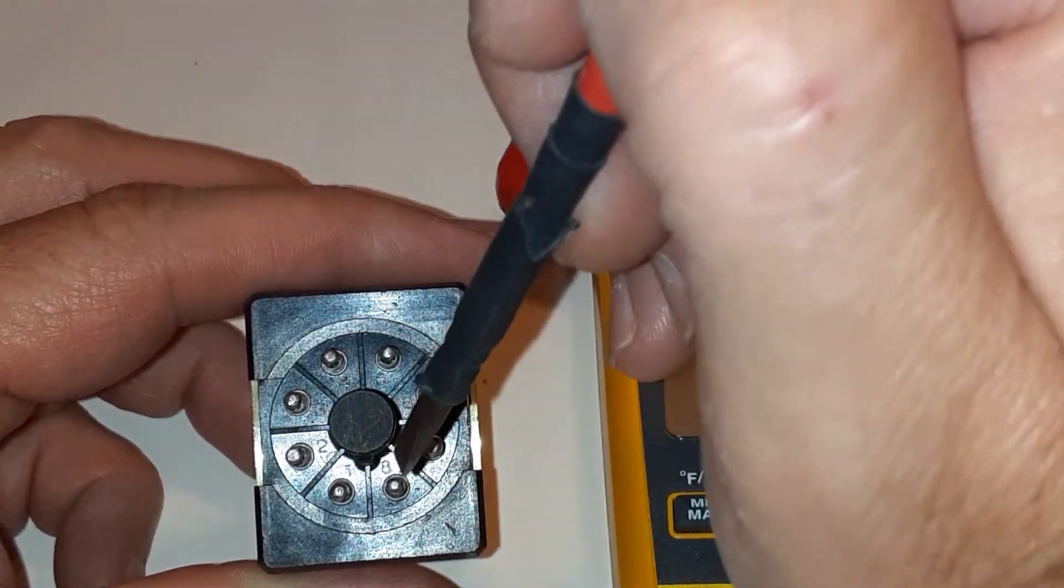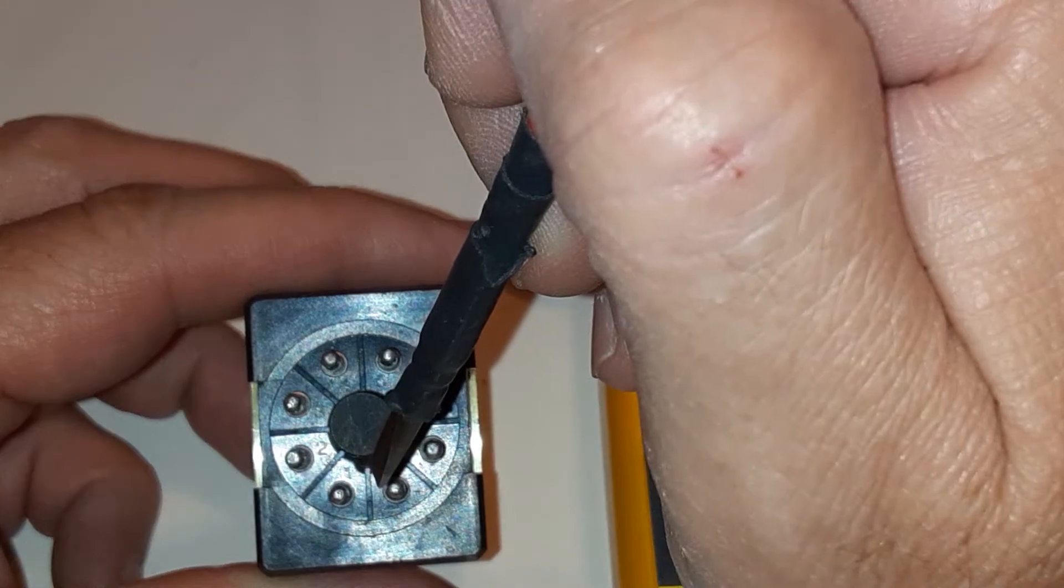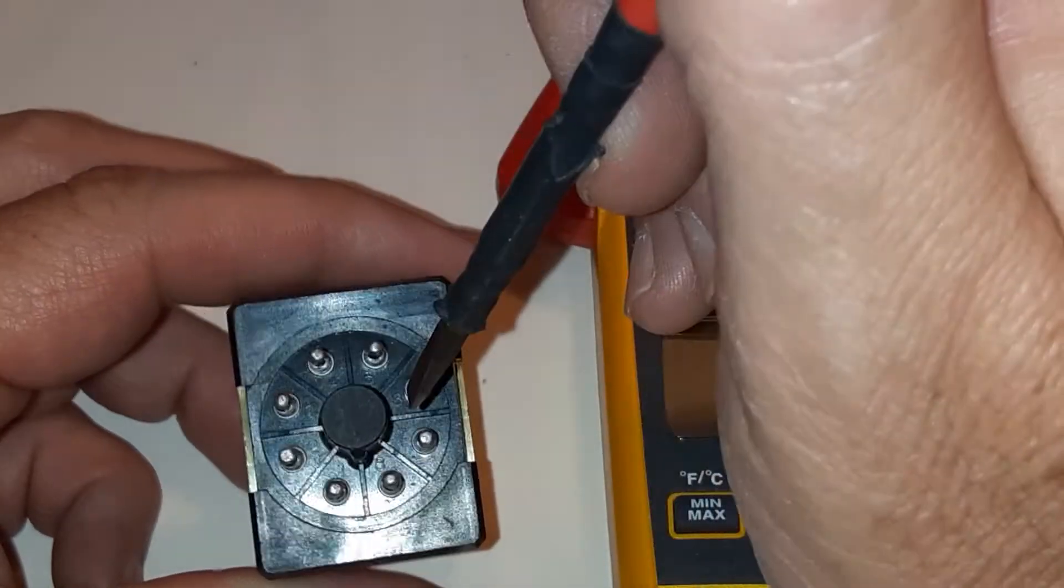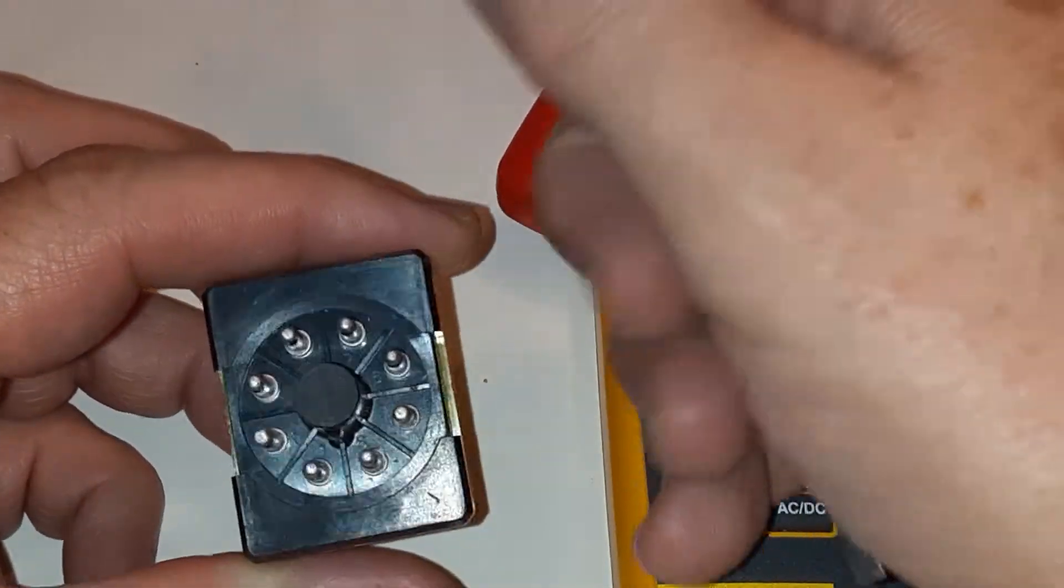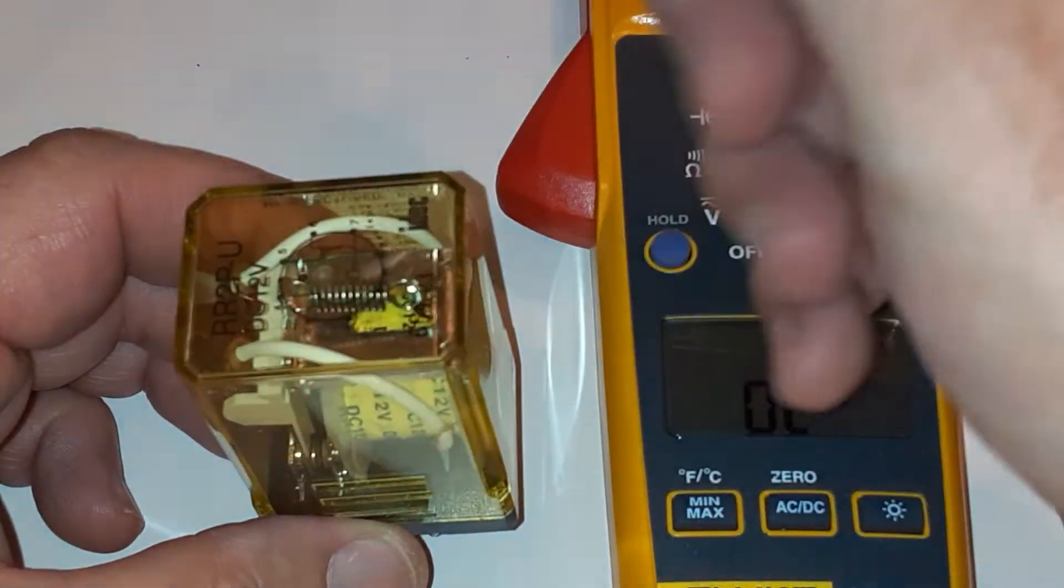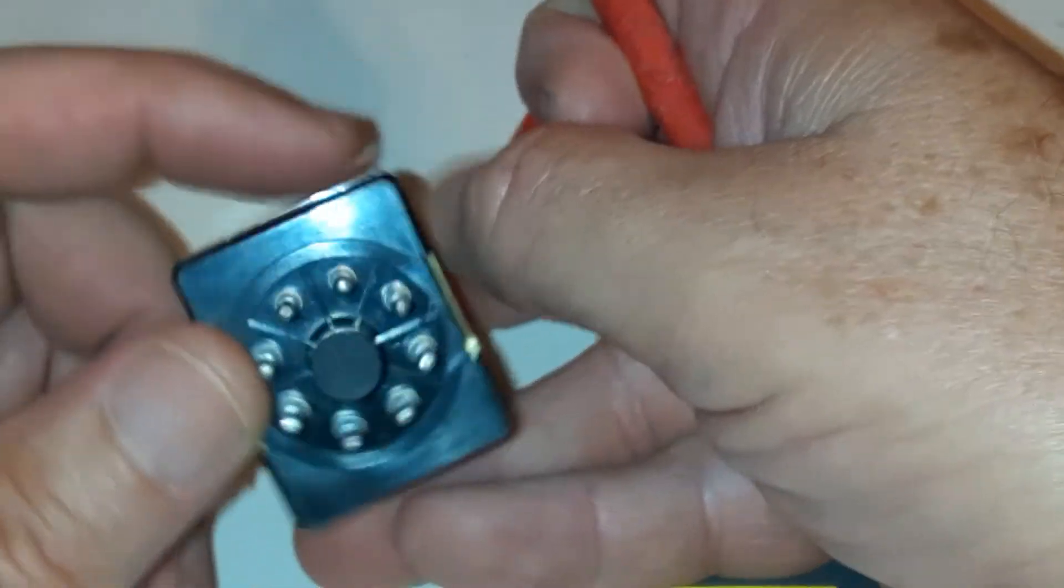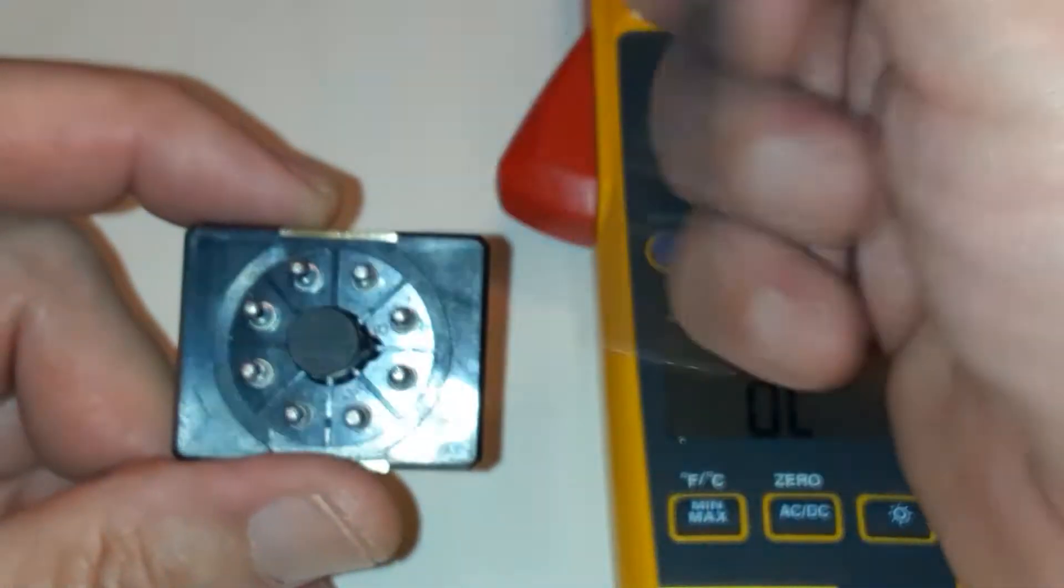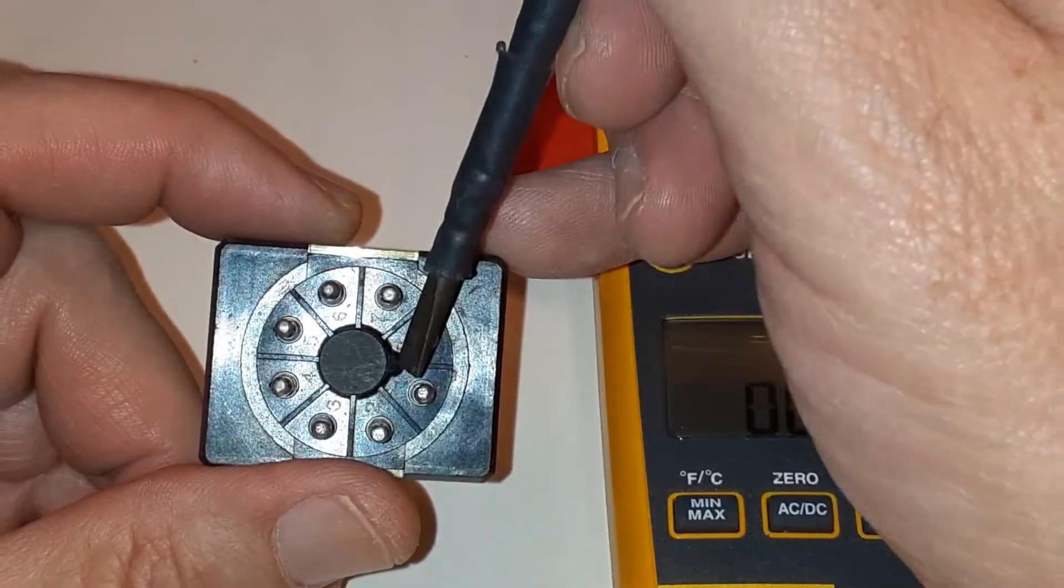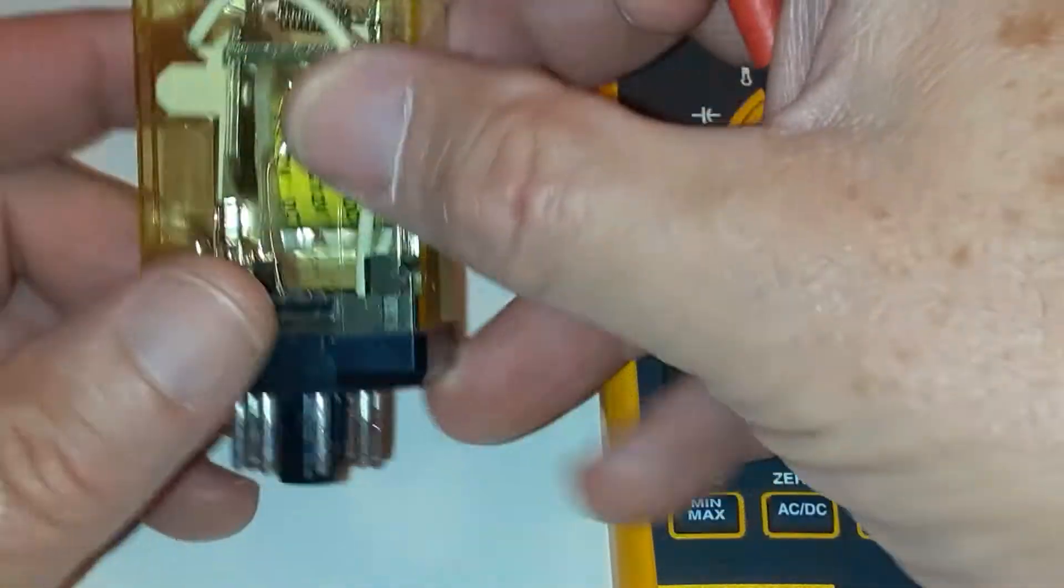You'll notice also there's a little plastic tab right here at the bottom. That's intended to align the relay with the relay base so it plugs in correctly. If you don't do that, you could rotate it any way and plug it in. So the tab aligns the relay with the base.